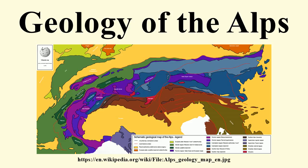The Alps form a northward convex arc around their southeastern Foreland Basin, the Po River Basin. Quaternary and Neogene sediments in this basin lie discordant over the southernmost thrust units. In the northeast, southward dipping and internally thrusted Cenozoic Foreland deposits are found.